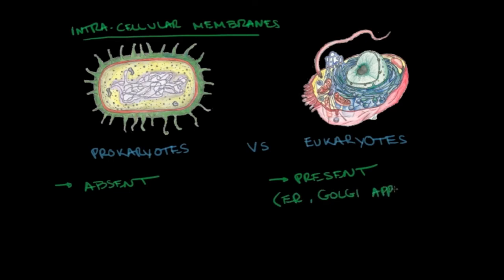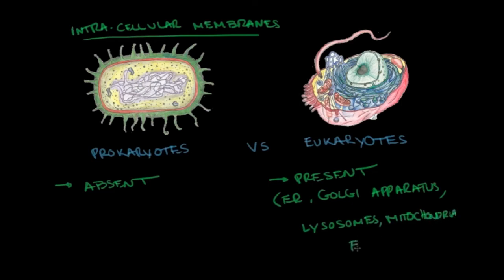Examples of organelles enclosed by intracellular membranes in eukaryotes include the endoplasmic reticulum, Golgi apparatus, lysosomes, and mitochondria — all surrounded by intracellular membranes.